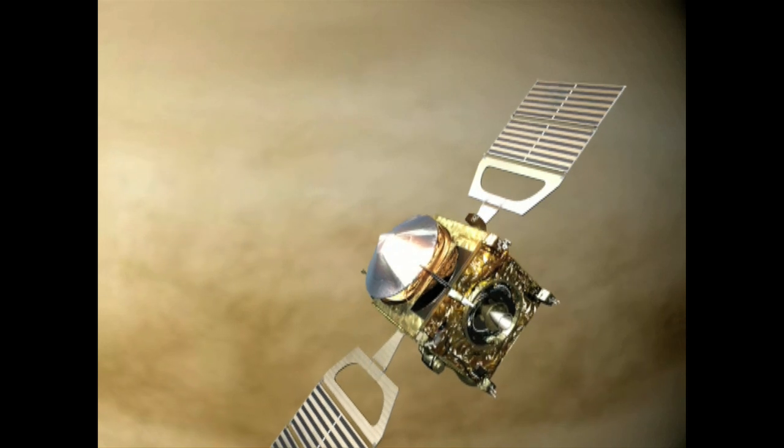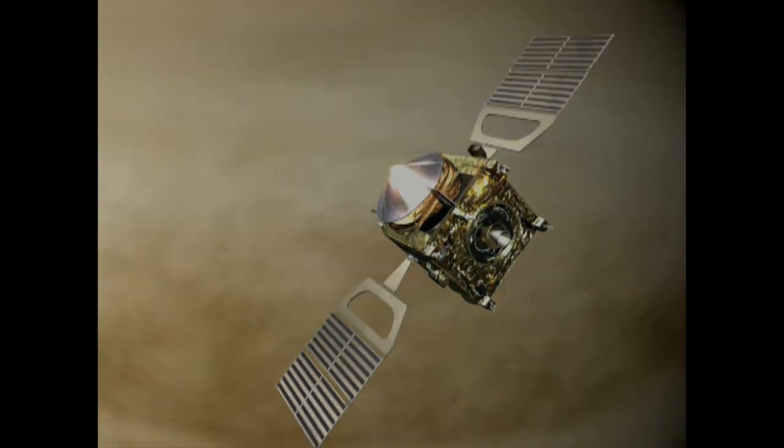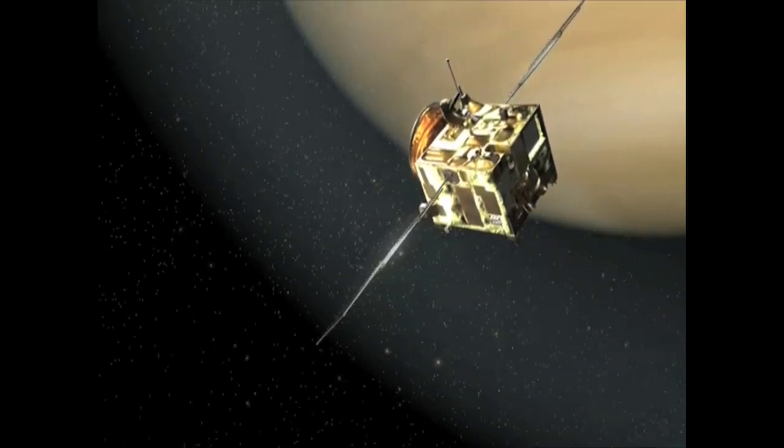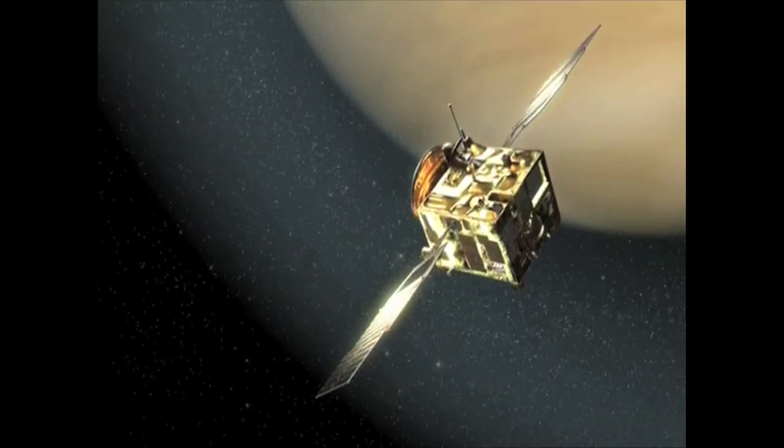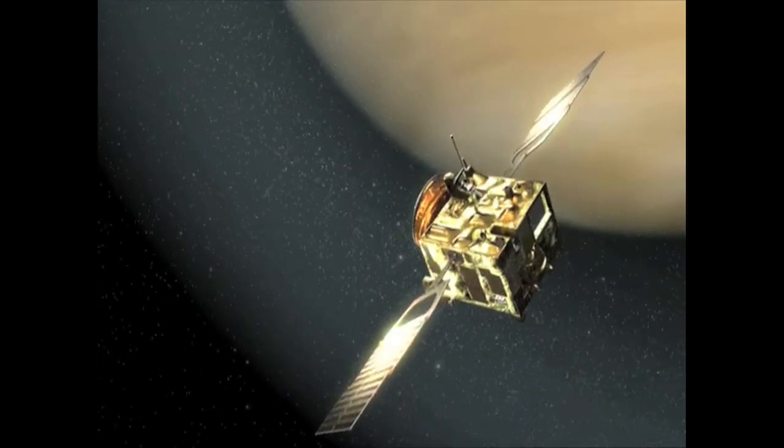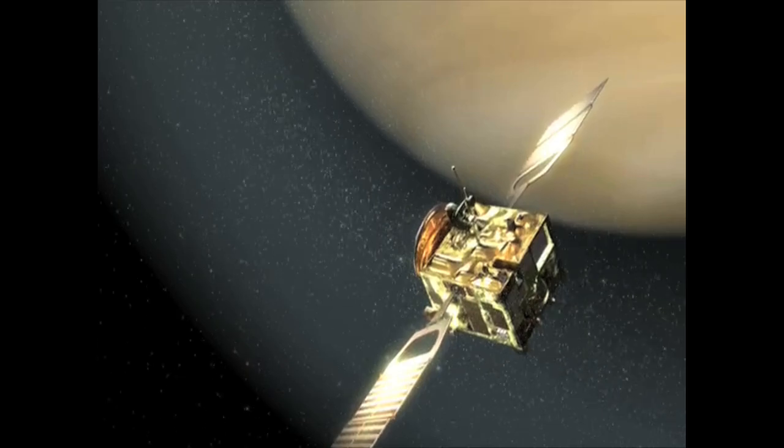A spacecraft that makes the journey across the Solar System to another planet can take close-up images of the surface as well as directly monitor its atmosphere and interaction with the particles emitted by the Sun.